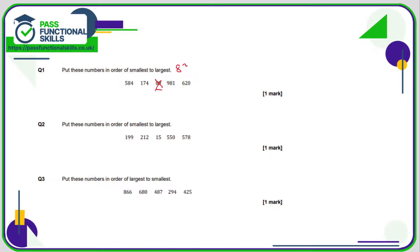So we'll start our list with 89. With the rest, we're just comparing the first digits: 5, 1, 9, 6. 1 is lower than 9, 6, and 5, so 174 comes next. 5 is lower than 6 and 9, so 584 comes next. 6 is less than 9, so 6209 then 81.